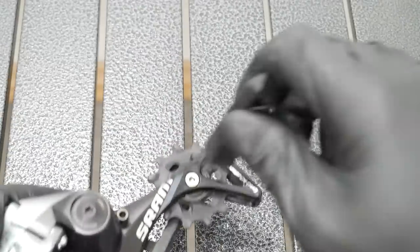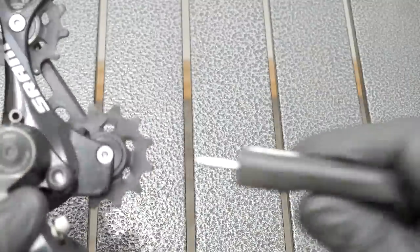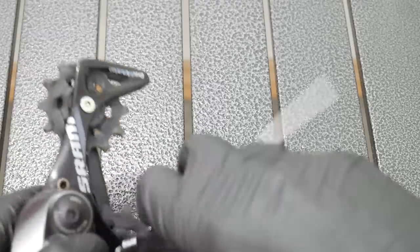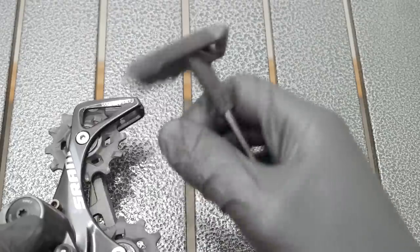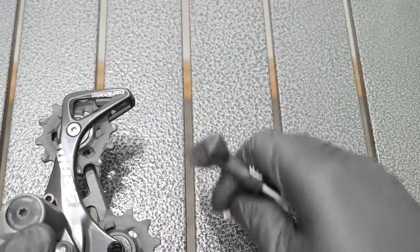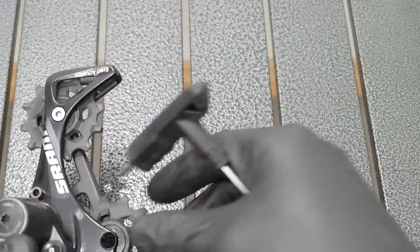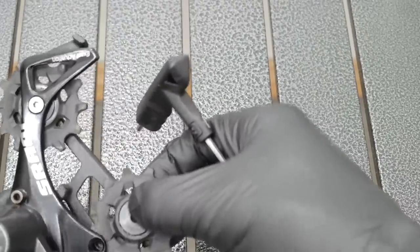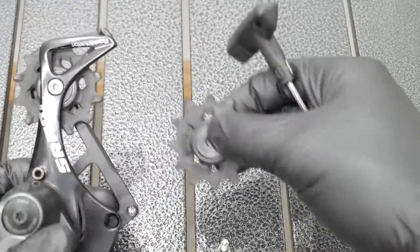Three millimeters Allen key, there you go. Actually I already removed this pulley, the down pulley, the bottom pulley or the tension pulley in order to open up the cage of the derailleur and remove it from the chain because otherwise you would need to break the chain.